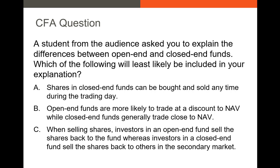We're looking for the least likely answer. The correct answer is B. Open-end funds trade at exactly the NAV; closed-end funds are the ones where you could have a discount — that's the closed-end fund discount, a discount to NAV. Closed-end funds are sold to other investors in the secondary market, whereas open-end funds redeem shares back to the fund family. So B is the correct answer; A and C are both true.